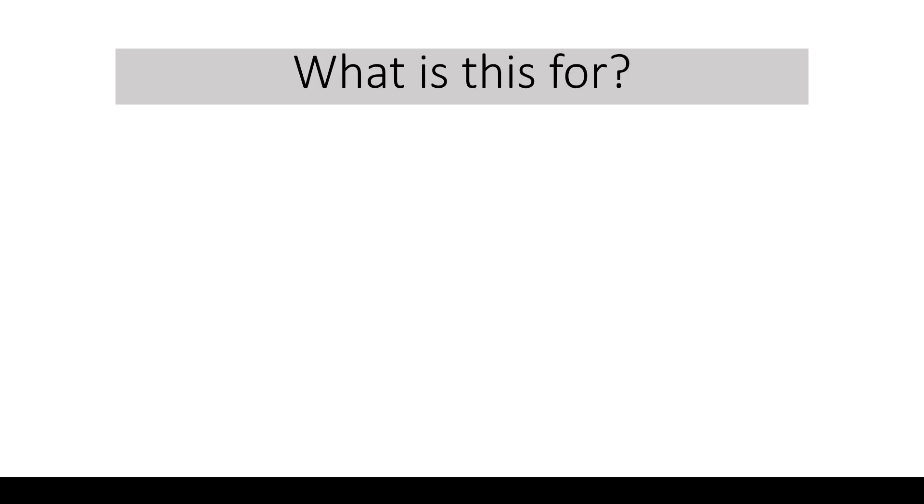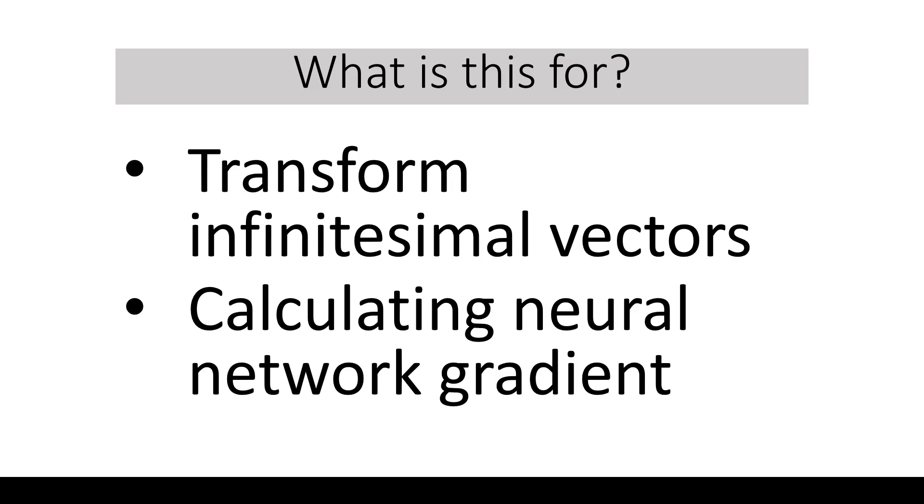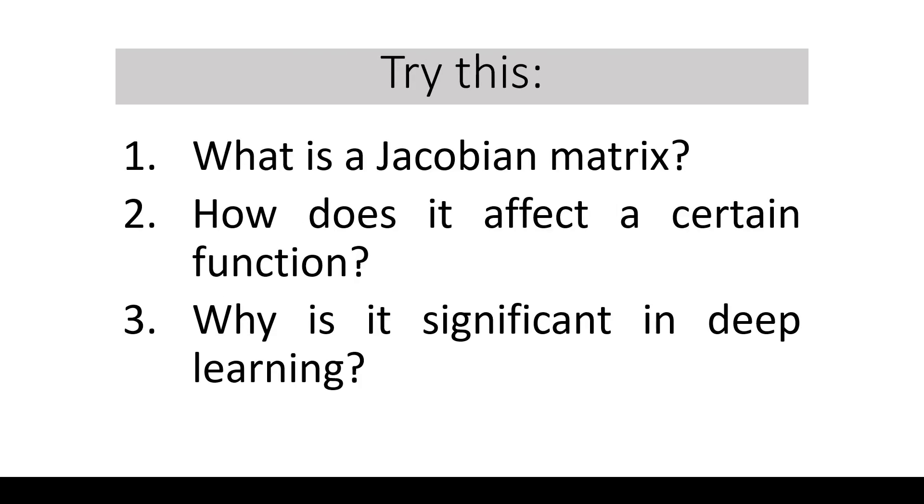What is this for? Why do we have to study this? A Jacobian matrix is used to transform the infinitesimal vectors from one coordinate system to another. It is used in calculating neural network gradient. After all being said and done, let's try this.